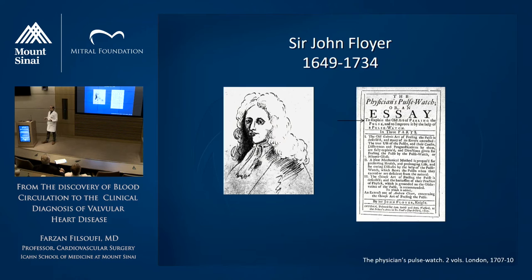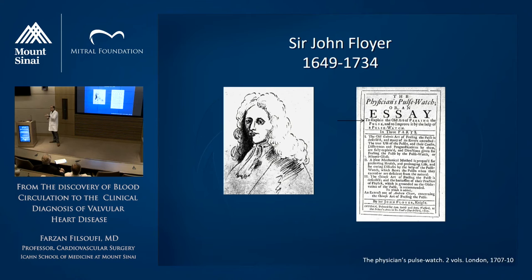John Floyer is the father of the modern pulse. His book Physician's Pulse Watch aimed to explain and improve the old art of feeling the pulse using a pulse watch — a device that allowed calculating pulse over a minute. He found the average was between 70 and 75, the minimum 55, and the maximum 132. He also looked at differences by gender and age, but there are no significant contributions in terms of valvular heart disease.